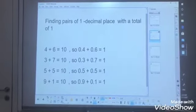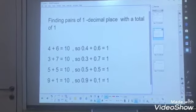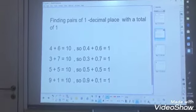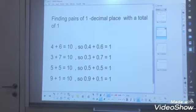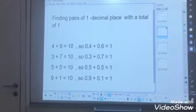Here we are going to find the pairs of one decimal place with a total of 1. For that, we are using our number bonds to help us. How?